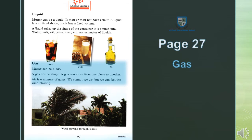Page 27, paragraph 2: Gas. Matter can be a gas — maada gas bhi ho sakti hai. A gas has no shape — gas ki koi shakal nahi hoti. A gas can move from one place to another — gas ek jagah se dusri jagah harkat kar sakti hai, yani ek jagah se dusri jagah ja sakti hai. Air is a mixture of gases — hawa bohat si gason ka majmua hai, yani hawa bohat si gason se milkar bani hai. We cannot see air, but we can feel the wind blowing.